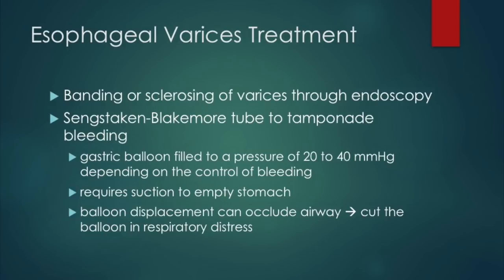In severe acute esophageal bleeds, a Sengstaken-Blakemore tube can be used — a balloon to tamponade the bleeding, filled to 20 to 40 millimeters of mercury depending on bleeding severity. The stomach must be emptied via another catheter within the balloon for suction. There is an increased risk of airway occlusion if the balloon becomes displaced, so scissors must be kept at the bedside to cut the balloon in respiratory distress.